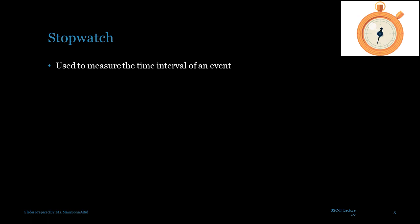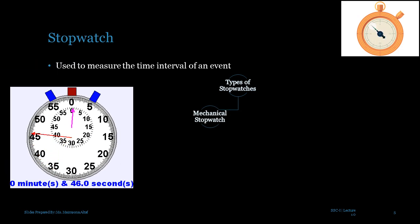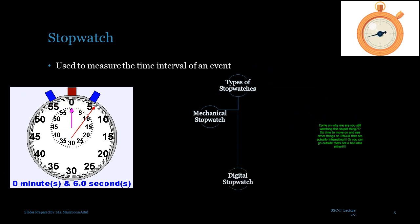So for that case, the instrument which is more accurate is the stopwatch. Stopwatch is used to measure the time interval of an event. There are two types of stopwatches: number one is the mechanical stopwatch, second one is digital stopwatch.